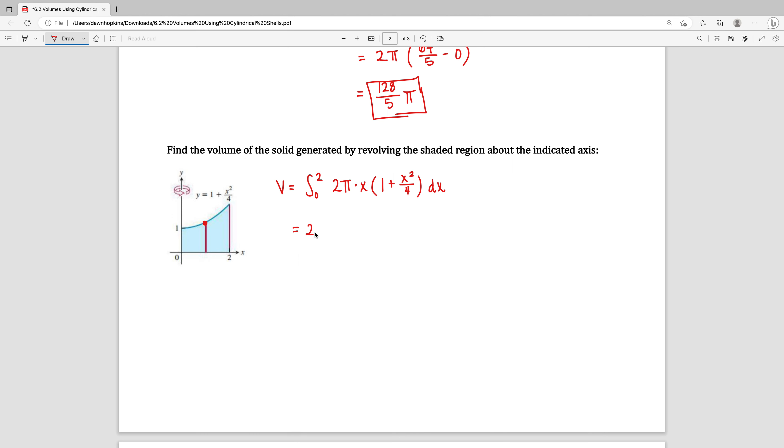If I pull that 2 pi in front, and then I distribute the X through those parentheses, I get X plus X cubed over 4 dx. Integrating, I have X squared over 2 plus X to the fourth over 4 times 4, which is X to the fourth over 16.